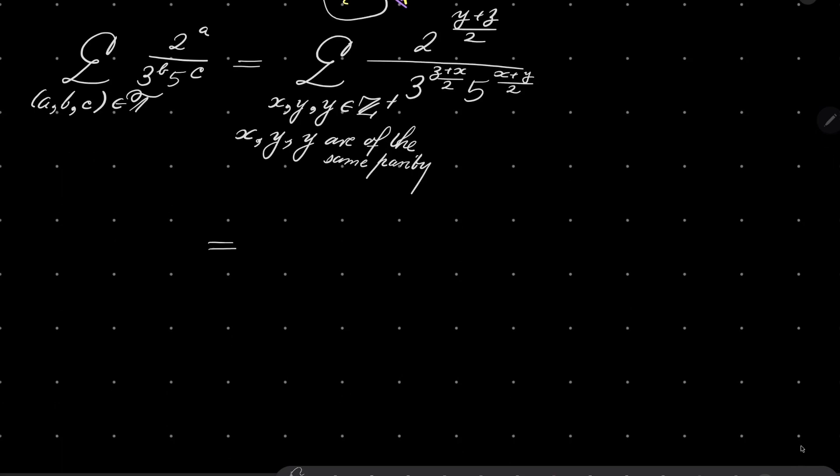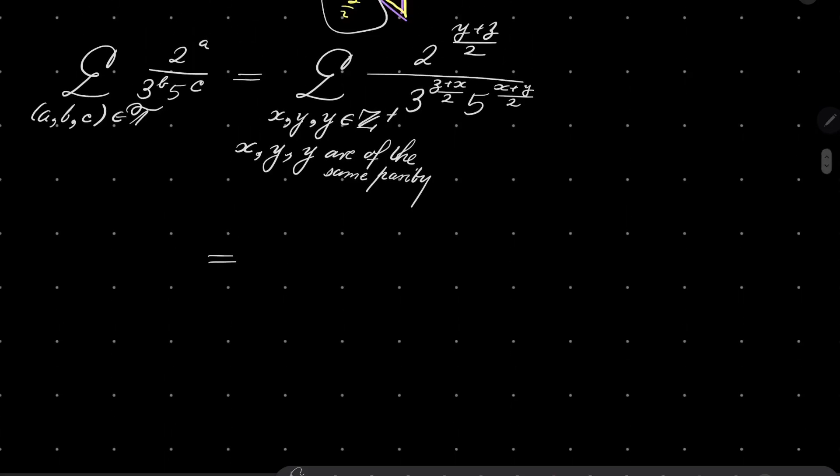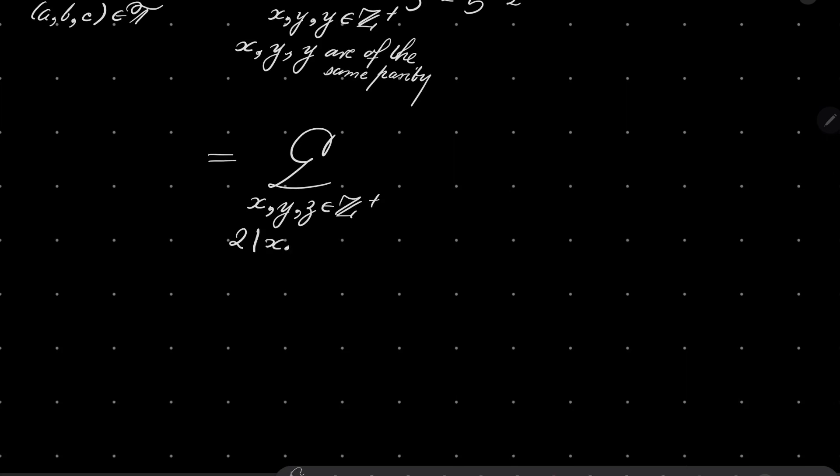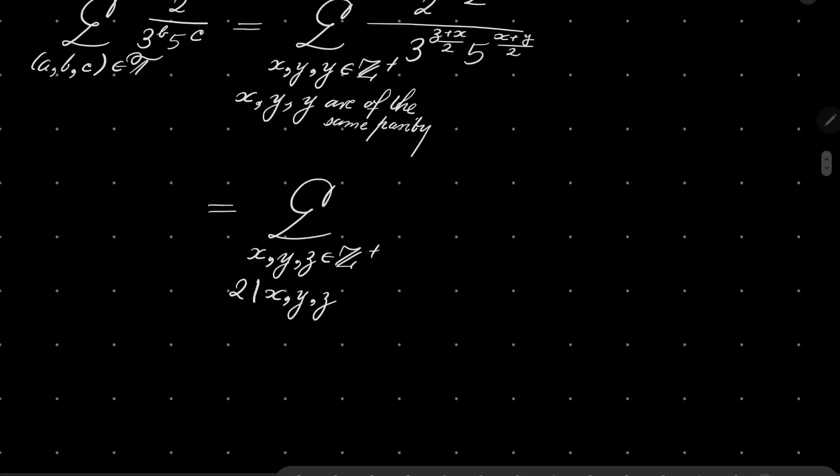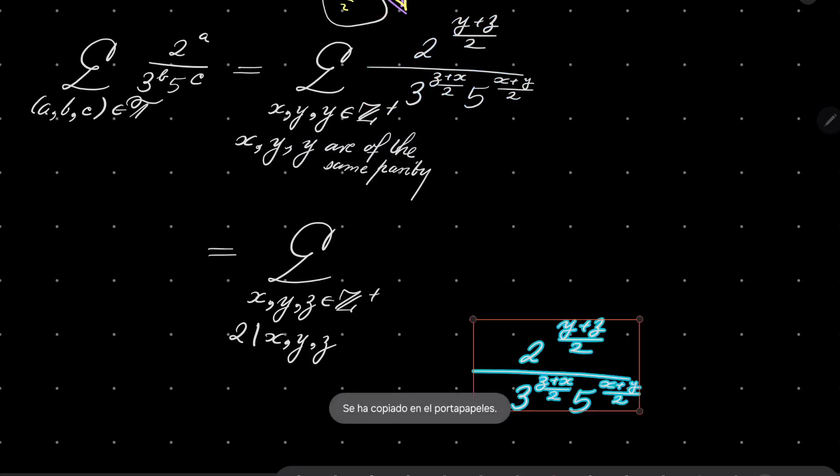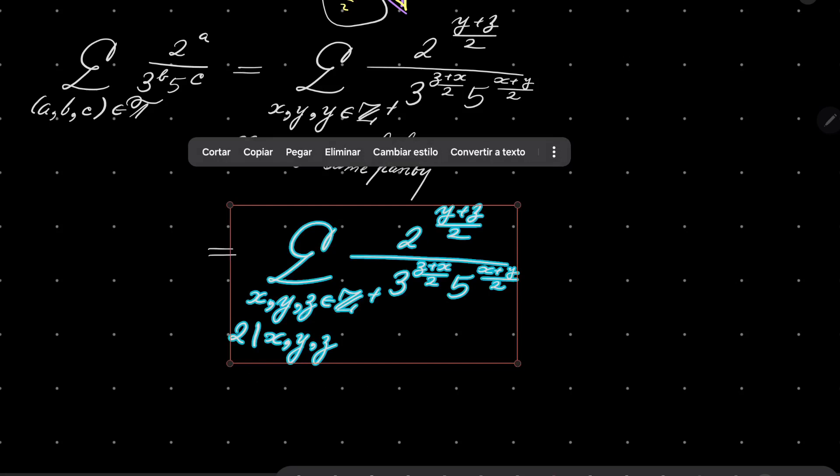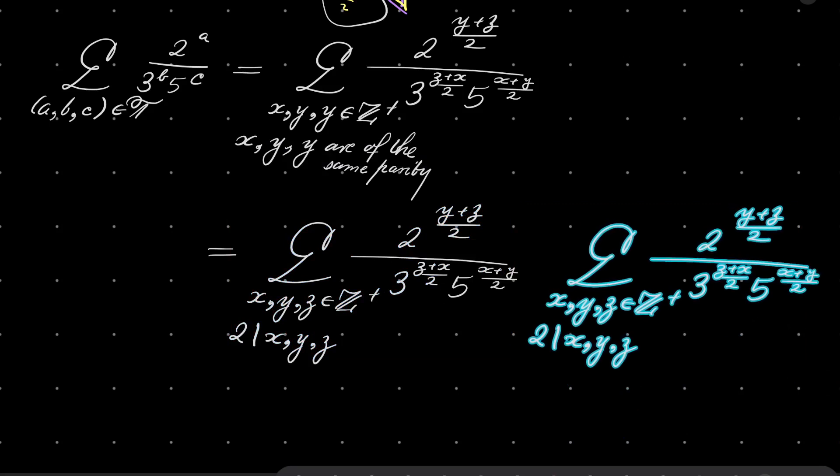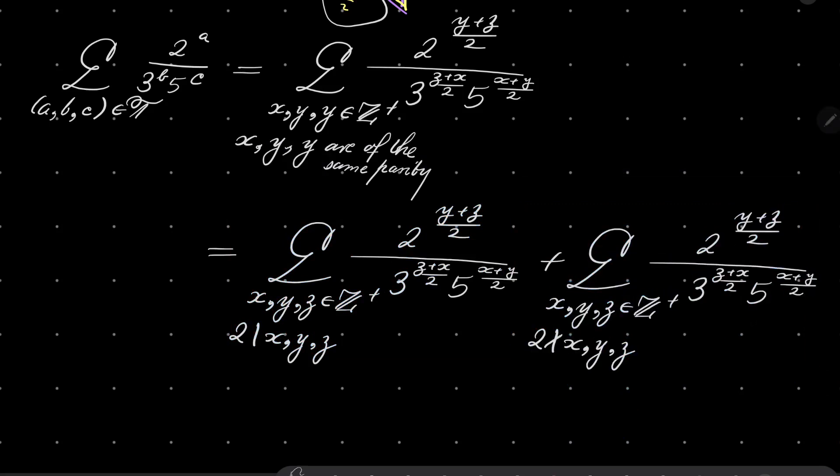And now I will replace my sum by two different sums. Notice that we are summing only positive numbers, so we can manipulate our sums freely, for example by Tonelli's theorem. So we can write first the sum over all positive integers which are all even, and then I will copy it. Plus the same sum but when all numbers are odd.